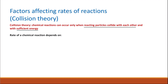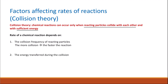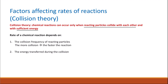The rate of a chemical reaction will depend on two main factors. The first one is the collision frequency of reacting particles, meaning how frequent the particles can collide with each other. So the more the collision, the faster the rate of the reaction. The second factor is the energy transferred during the collision — the higher the energy of the particles when they collide, the faster the reaction as well.